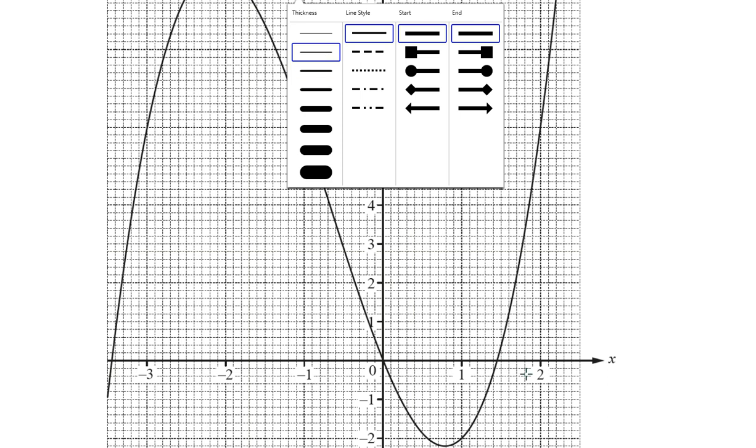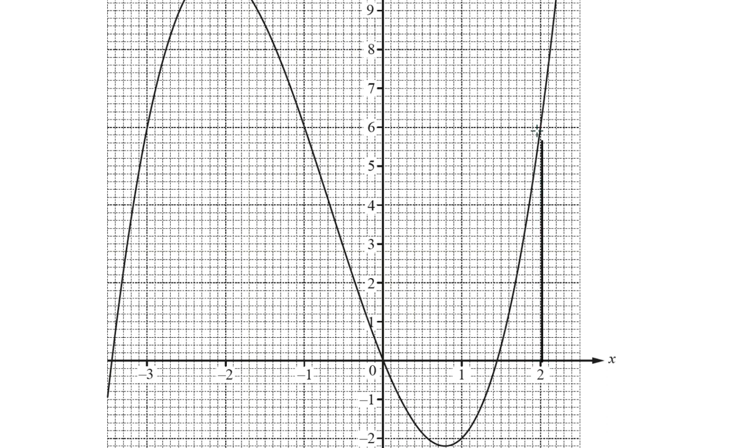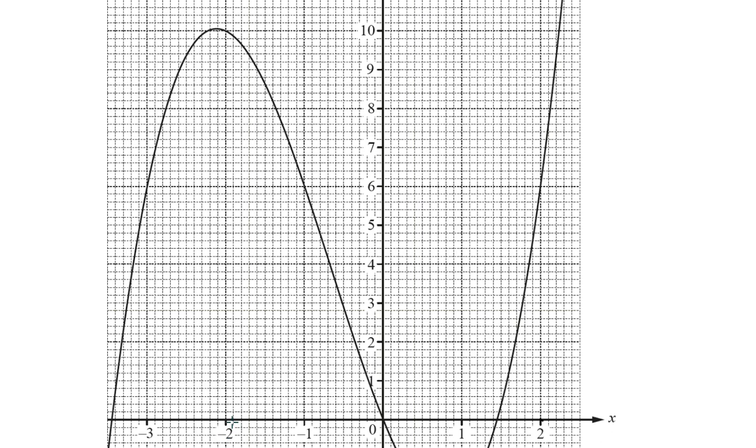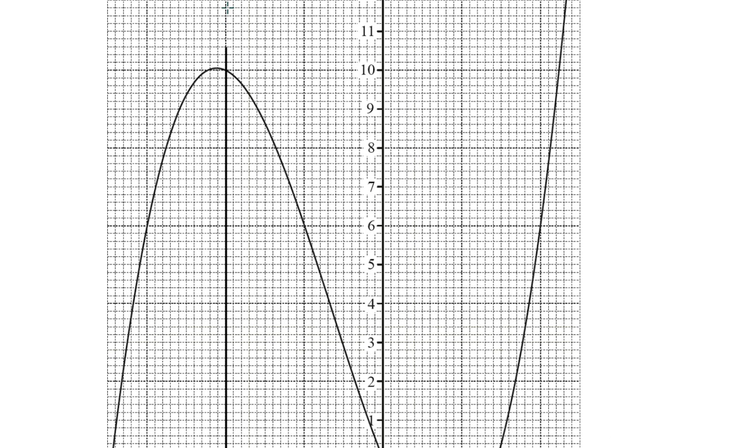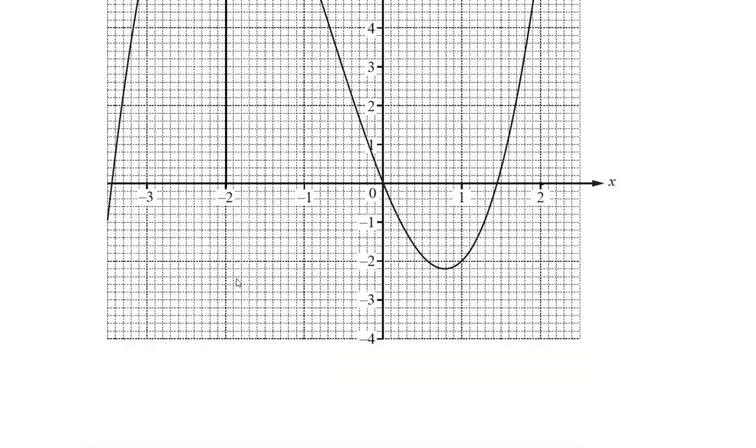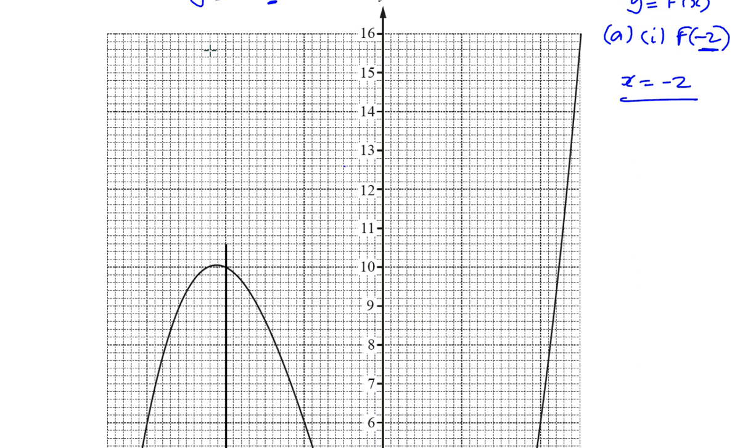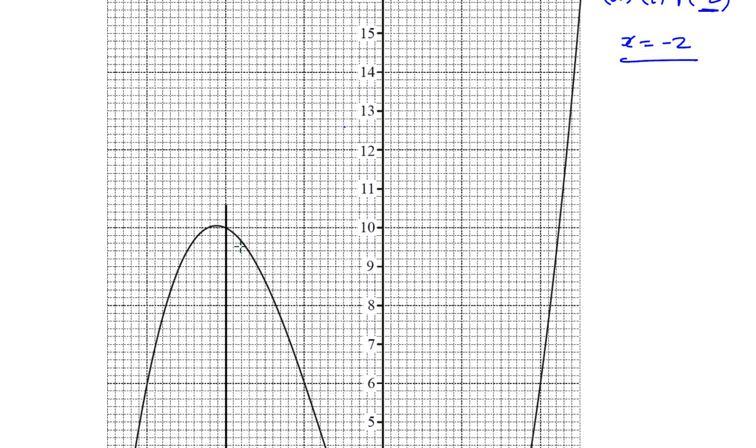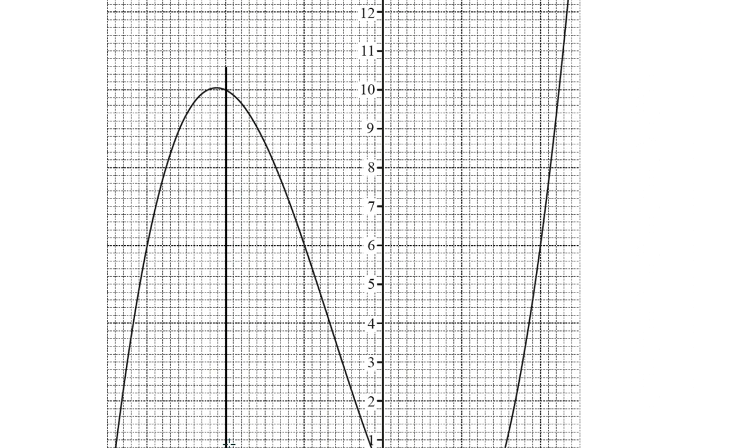Because the graph only passes through this part here. So, this is the line x equals minus 2. Minus 2 is over here. x equals minus 2 is this line that passes through the graph only at this place. I would normally draw it all the way along, but that's the line x equals minus 2.